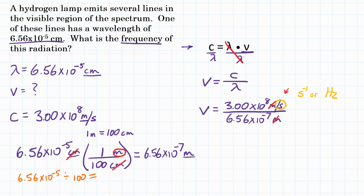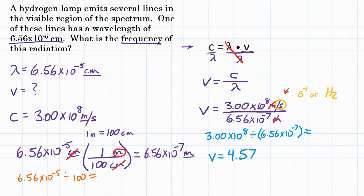Now we can do the math. We're taking the numerator and dividing by the denominator. In the calculator: 3.00 times 10 to the 8th, divided by — making sure the scientific notation stays together — open parentheses, 6.56 times 10 to the negative 7, close parentheses, hit equals. Your calculator should get 4.57317 times 10 to the 14th. Rounding to three significant figures, the frequency is 4.57 times 10 to the 14th hertz.